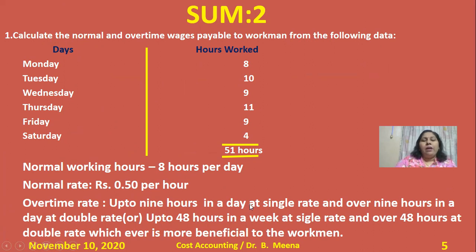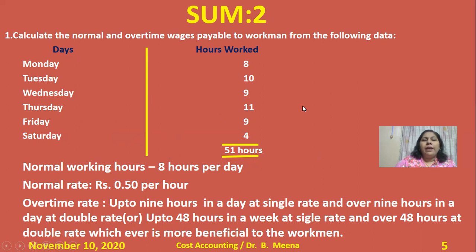Under Scheme 1, if the worker works up to 9 hours on any day, a single rate is applied. For example, on Wednesday and Friday where he worked 9 hours, a single rate applies. If he works over 9 hours in a day, double the rate is applied — for example on Tuesday and Thursday. There is also a second scheme given in this problem.